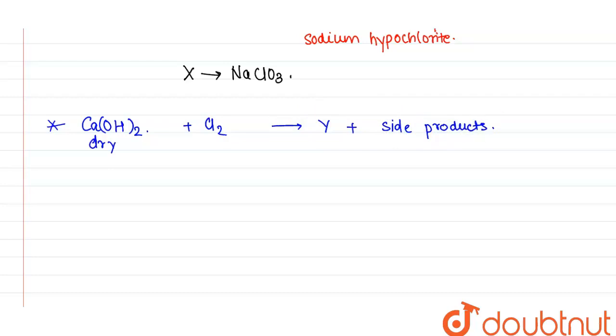This reaction is calcium hydroxide or we can see it is slaked lime. It will be Ca(OH)2 plus Cl2. It will give us CaOCl2 along with H2O.